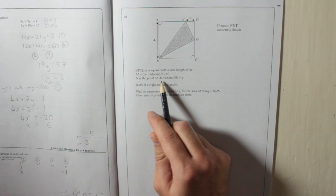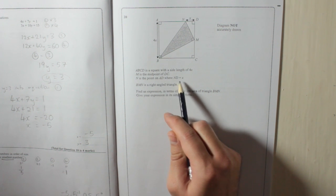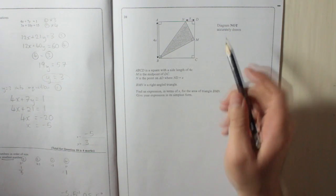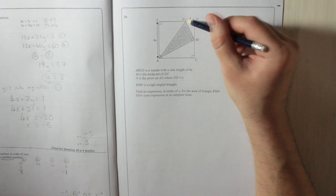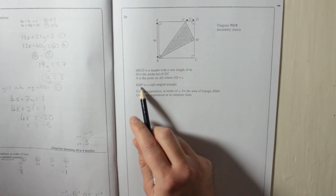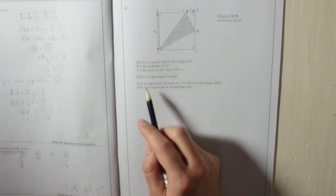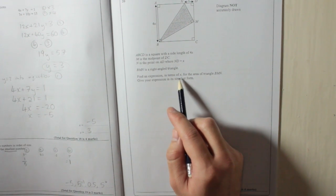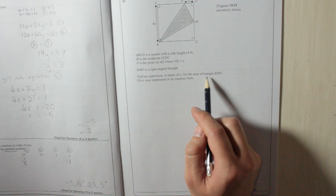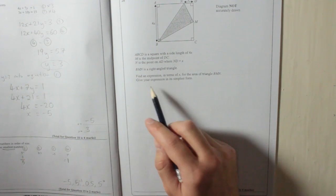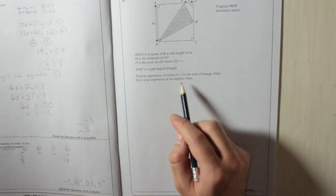N is the point AD where ND equals X. So where does it look? N to D, so there's X there. BMN is a right-angled triangle. Find an expression in terms of X for the area of triangle BMN. Give your expression in its simplest form.